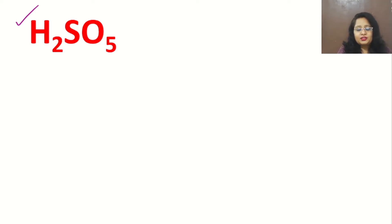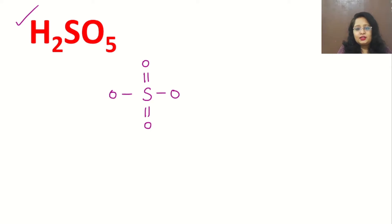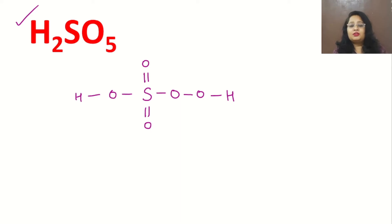Let's draw the structure. It has one sulfur in the center, then oxygen, oxygen here, oxygen here, oxygen, then here one hydrogen, here again oxygen, and this is hydrogen. So this is the actual structure of Caro's acid.